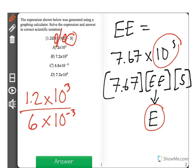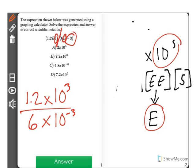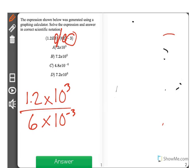So we have 1.2 times 10 to the 3rd over 6 times 10 to the negative 3rd. I'm going to erase this over here for more space to show my work. Now, step 1, I'm going to do 1.2 divided by 6. When I solve that, I get an answer of 0.2. So that's step 1.